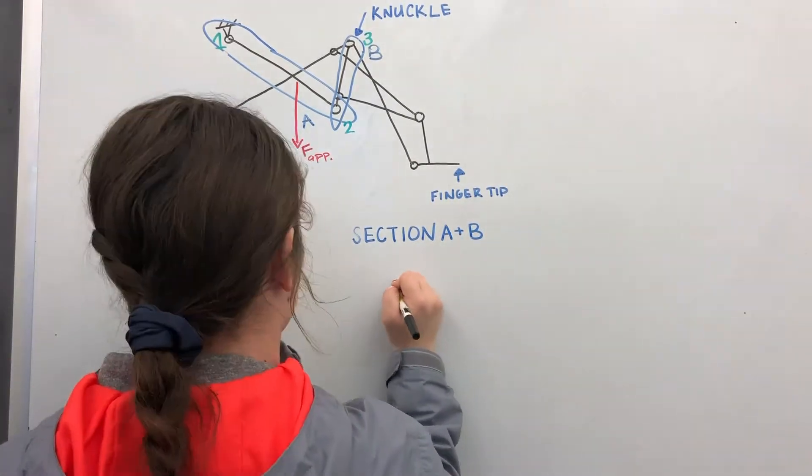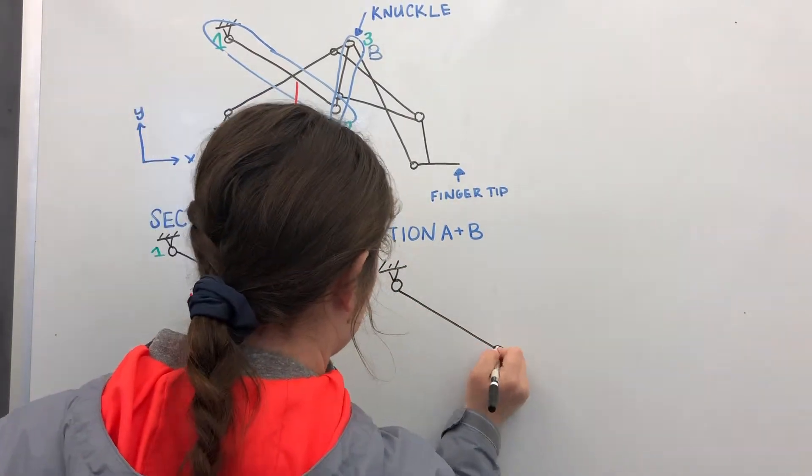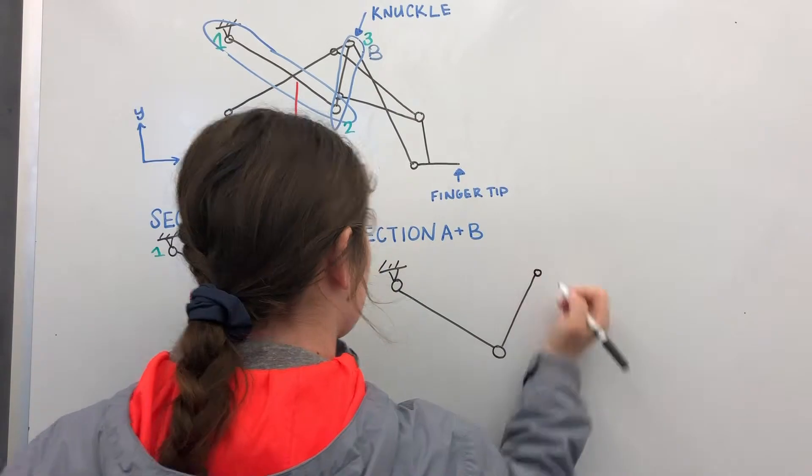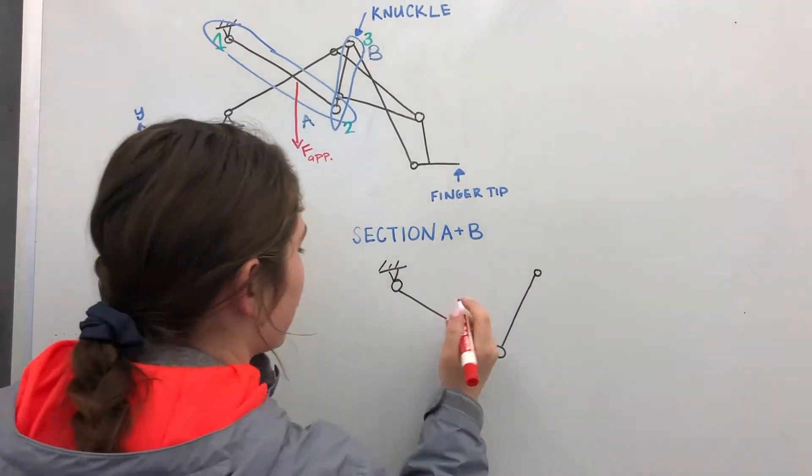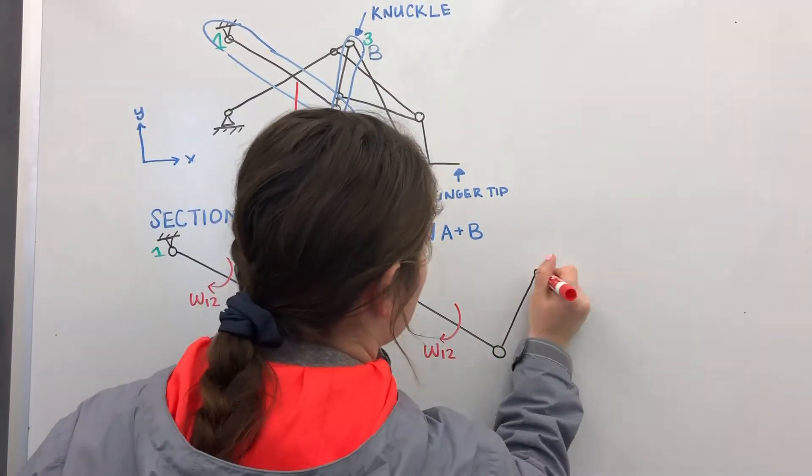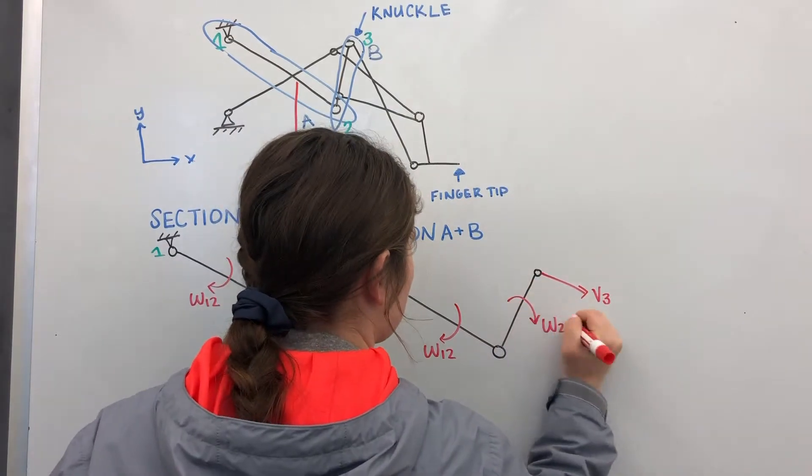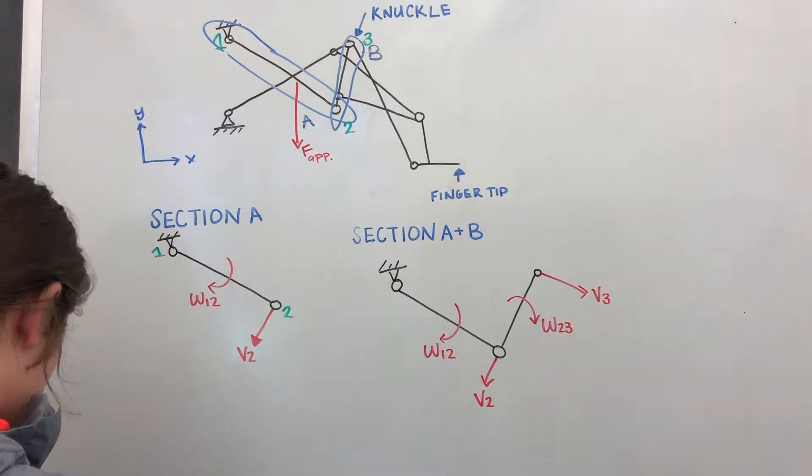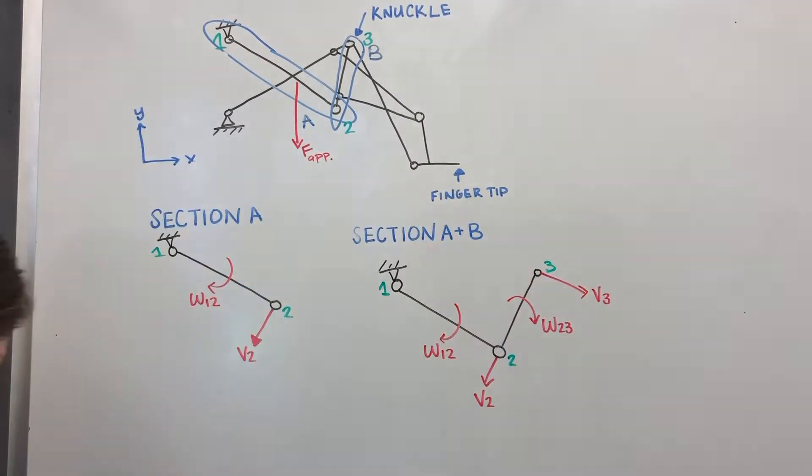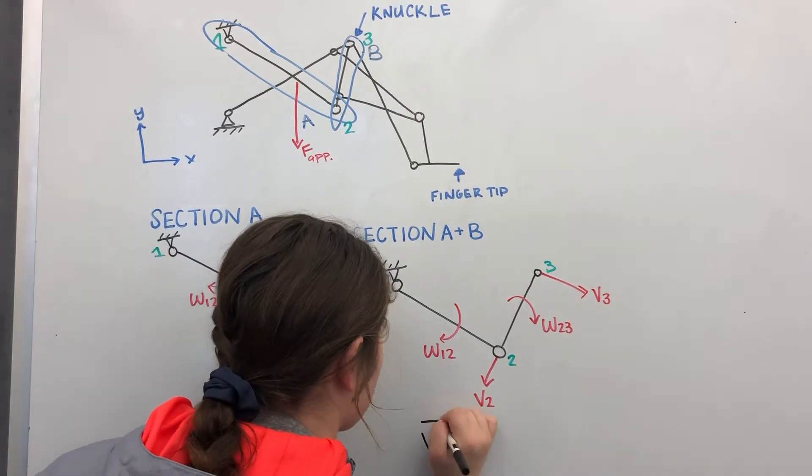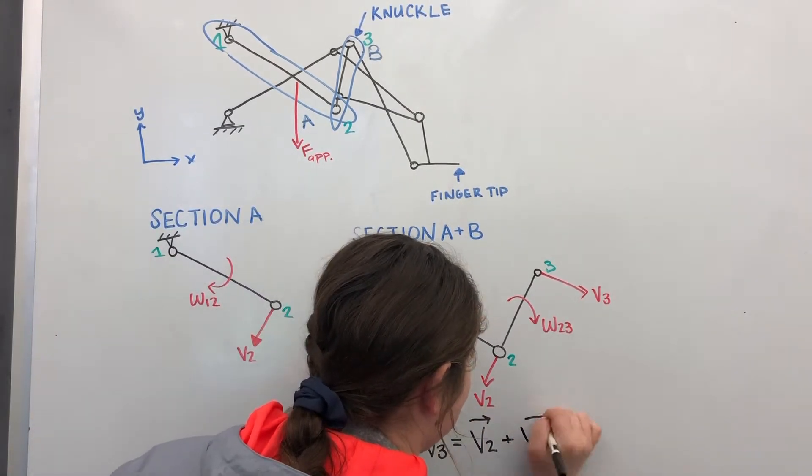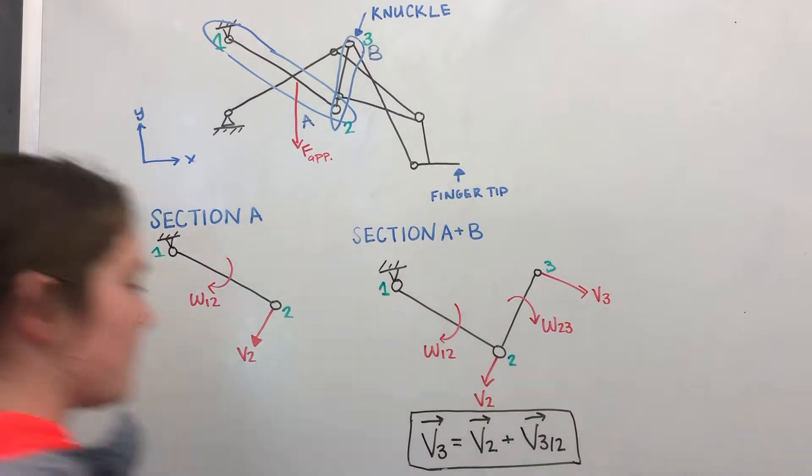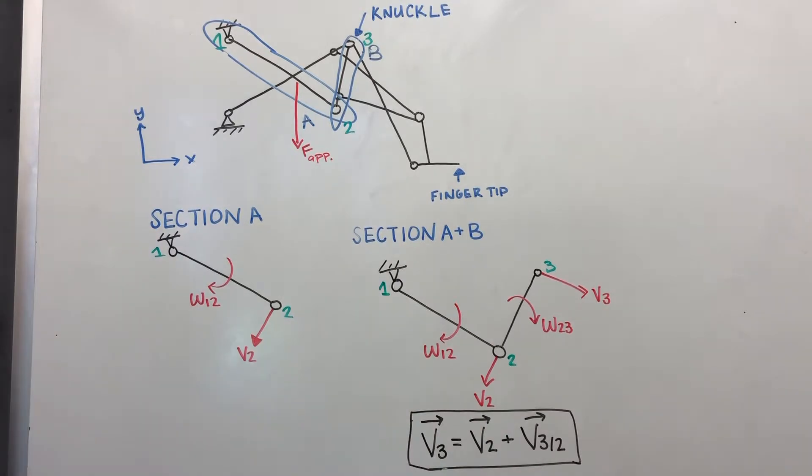Now, to determine the velocity of point 3, we will utilize our understanding of the motion of link 1-2 to determine the motion of link 2-3. The governing equation behind how they relate to each other is the velocity of point 3 equals the velocity of point 2 plus the velocity of point 3 in relation to point 2. In order to determine the motion of the fingertip, we would continue this process down the linkages.